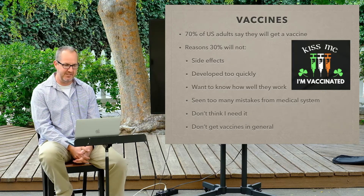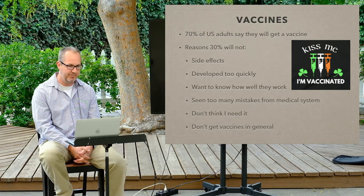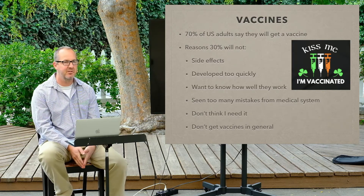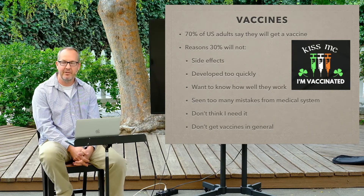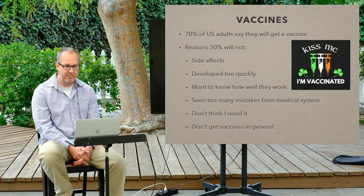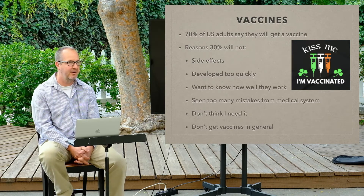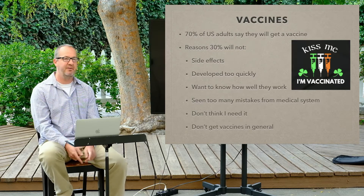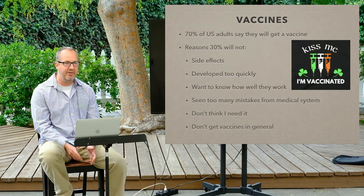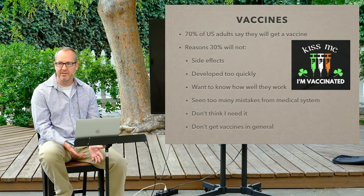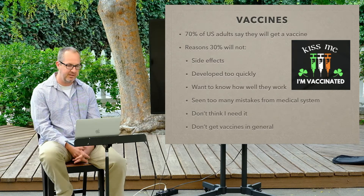Right now, vaccines — 70% of U.S. adults say they will get a vaccine. That means 30% will not. The number one reason people give for not getting it is side effects. They've heard that when they get the shot, they're going to get some reaction, and they're worried about that. Another concern is it was developed too quickly — wasn't this just made too fast? Shouldn't we give it more time to see what's going to happen? So it's not a hard no — it's a 'maybe I'll do it later' kind of thing.